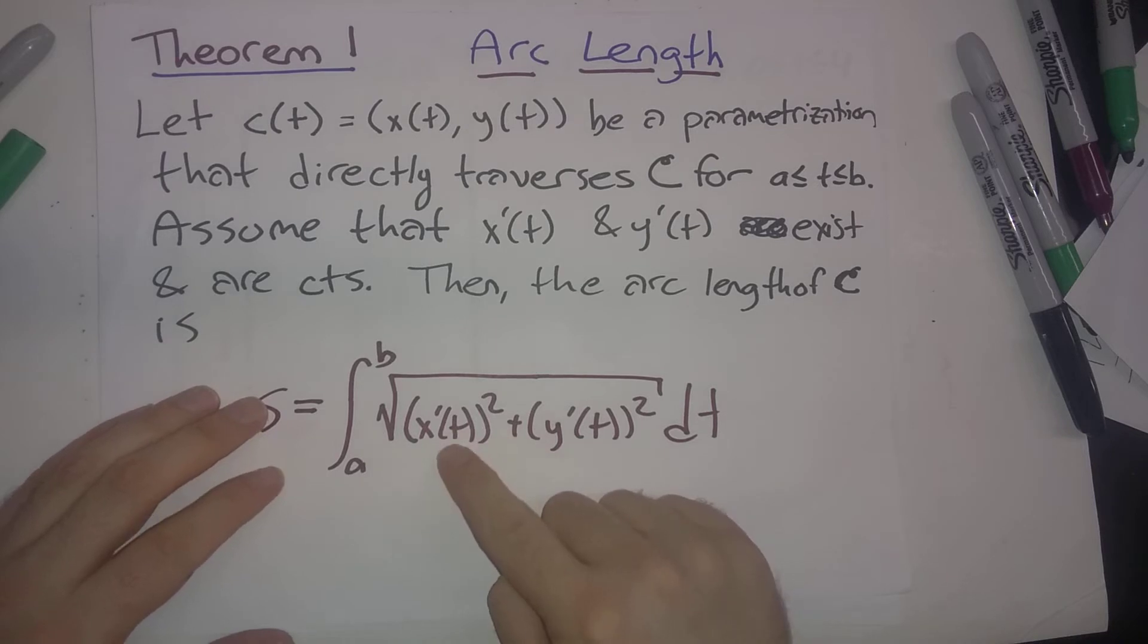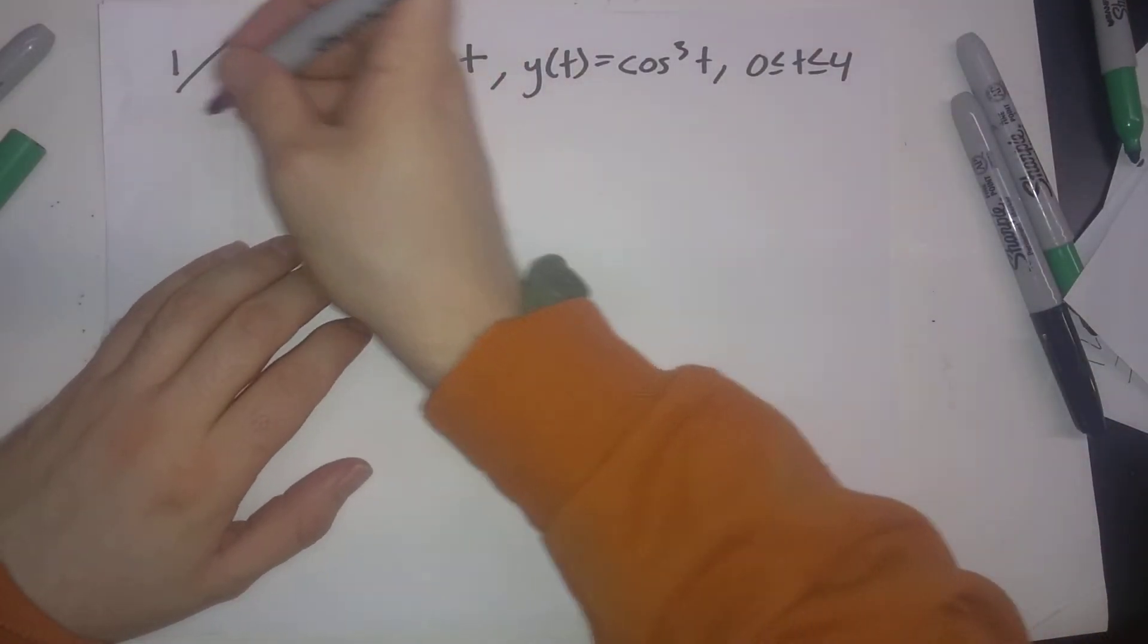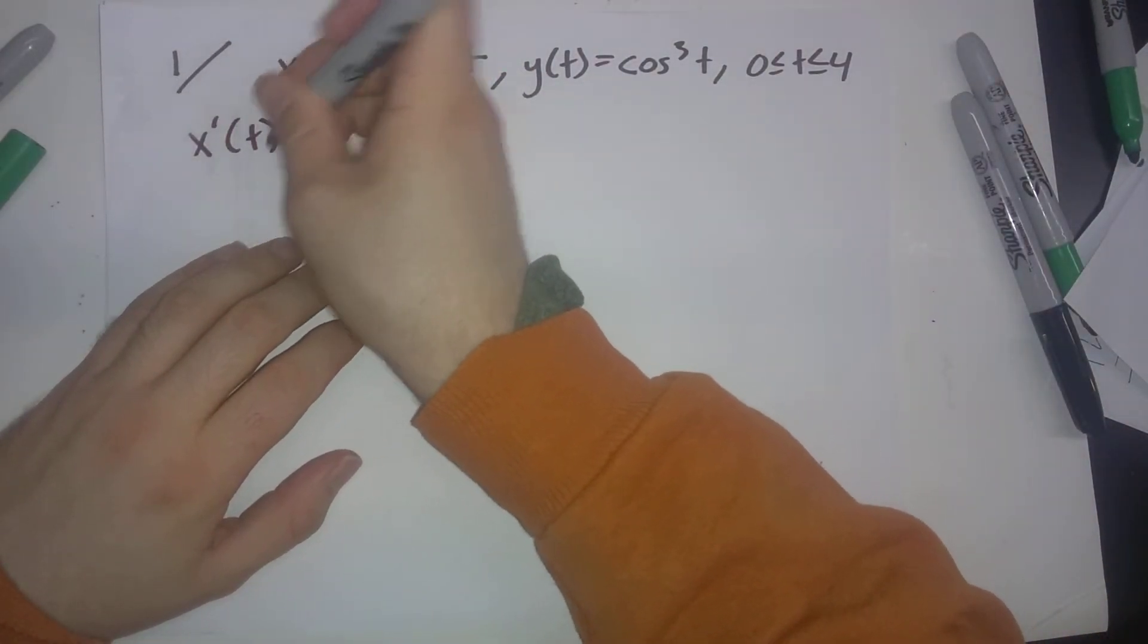What do we have to do? Take the derivative of x, take the derivative of y, square them and sum them, take the square root, and integrate that from 0 to π/4. Let's start crunching out what's going on here.